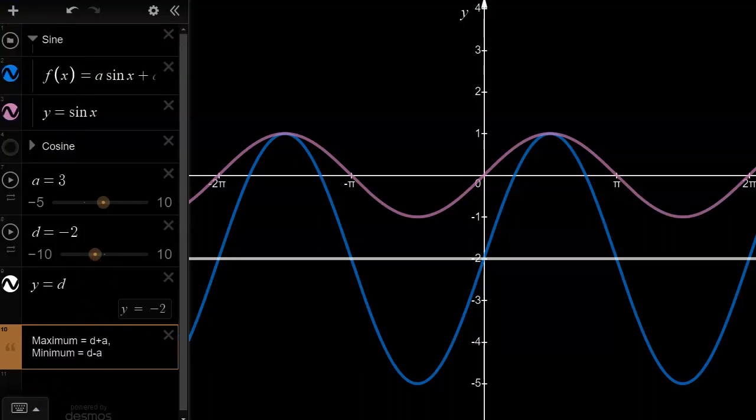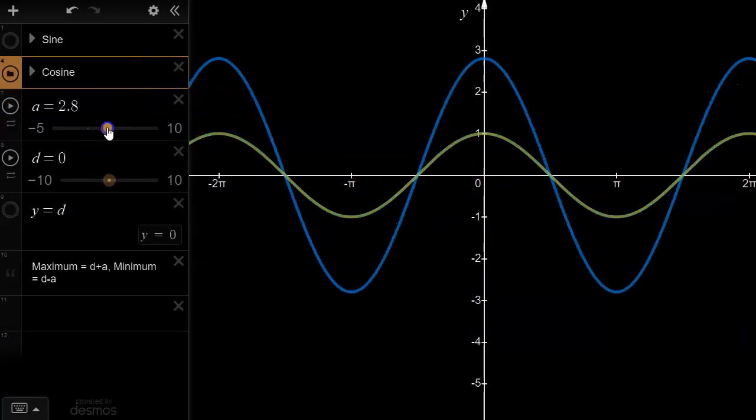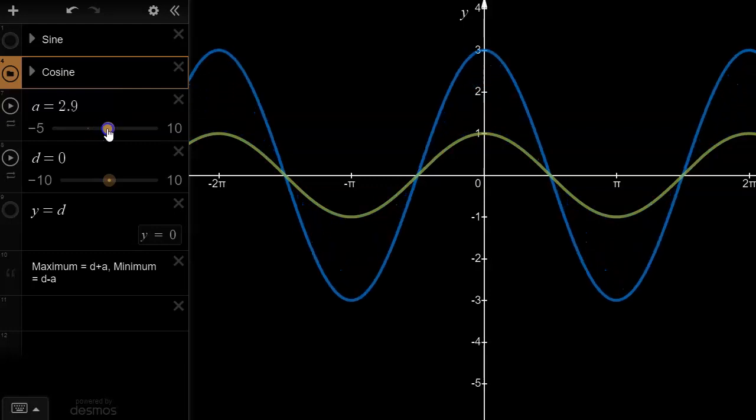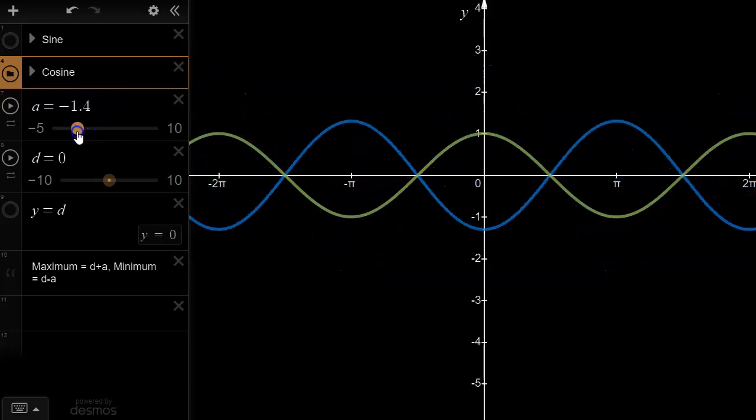In the last part of this video, let's take a quick look at how these same transformations affect the graph of y equals cosine x. So again, the a value affects the vertical transformation or the vertical stretch factor. But not only that, it also affects the amplitude of the graph. And if a goes negative, again, we have a reflection in the x-axis.